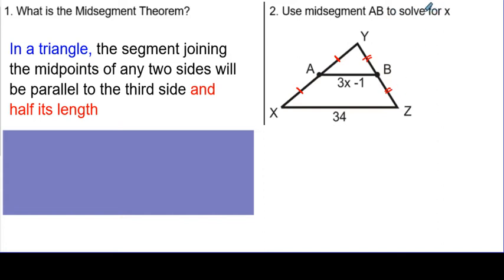But this says use that to solve for X. So if AB is 3X minus 1, then I know that this is going to be half of this parallel side. So this is going to be half of 34.